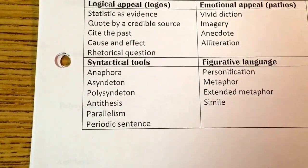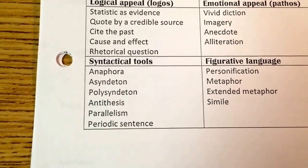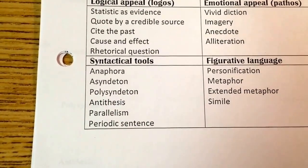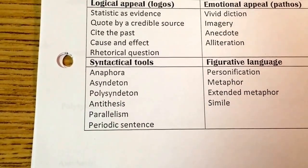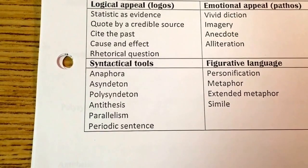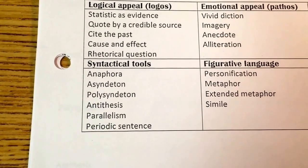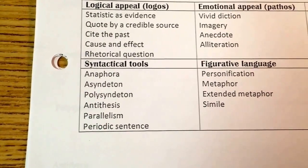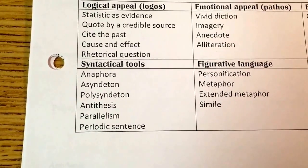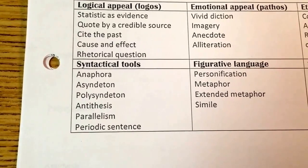In the next category, you need two from syntactical tools as well. You can include anaphora, ascendant, polysyndeton, antithesis, parallelism, or periodic sentence.